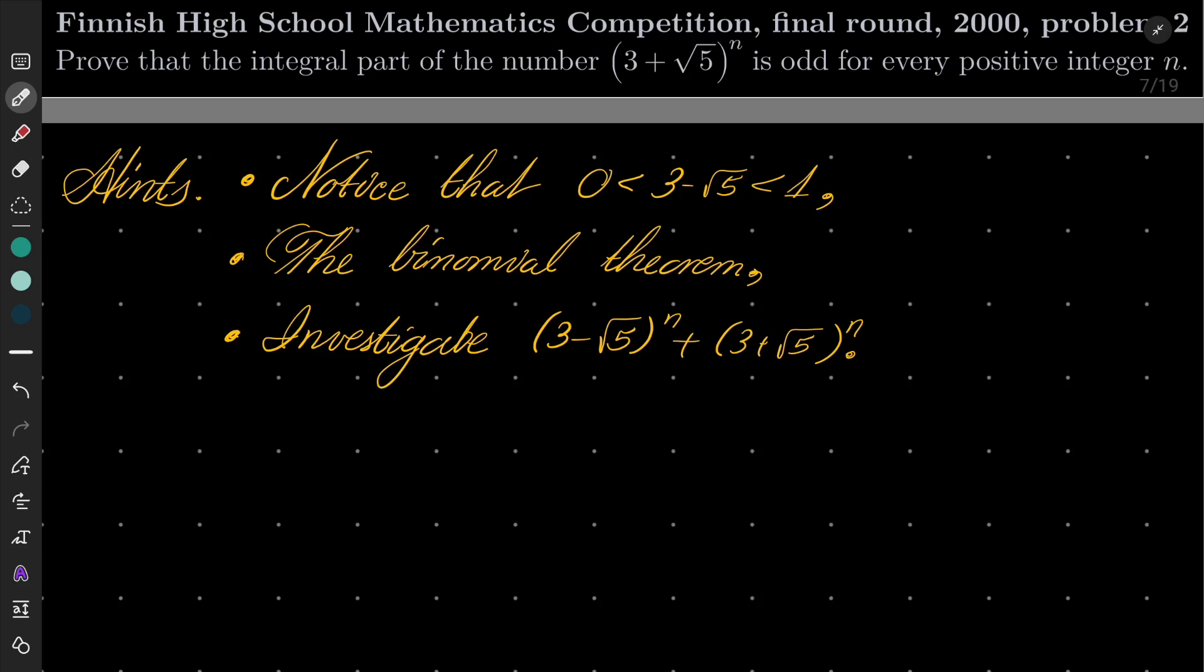We wish to prove that the integral part, i.e. the floor, of the number (3 + √5)^n is odd for every positive integer n.